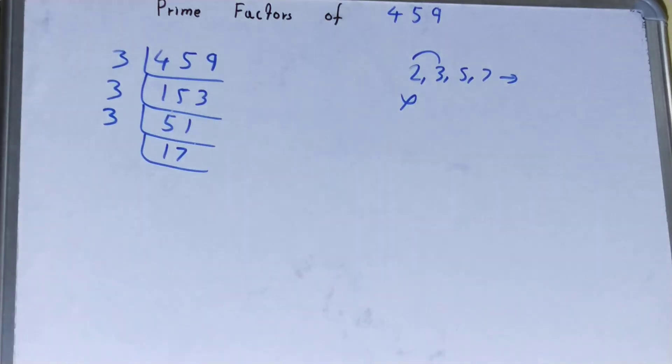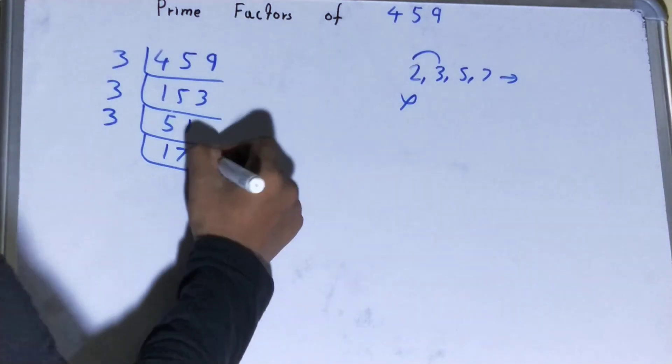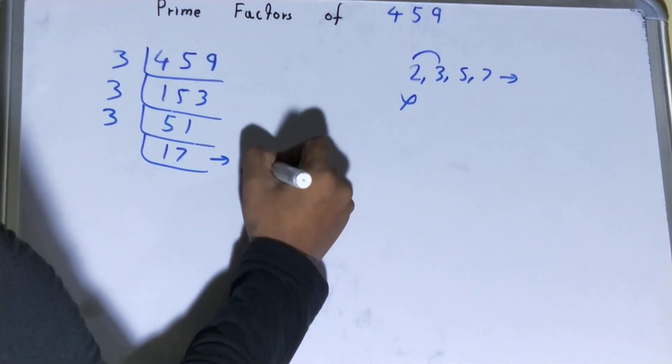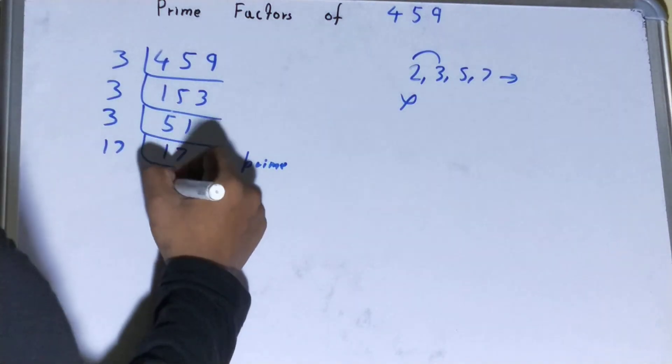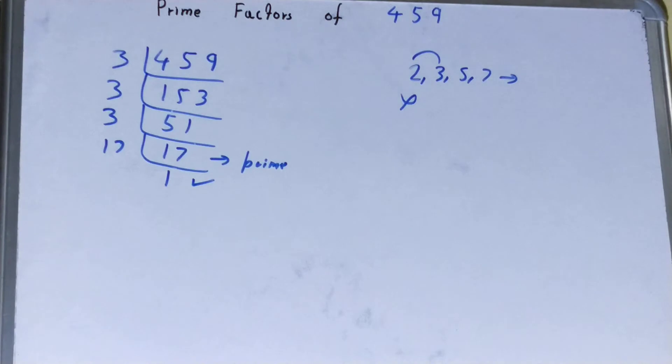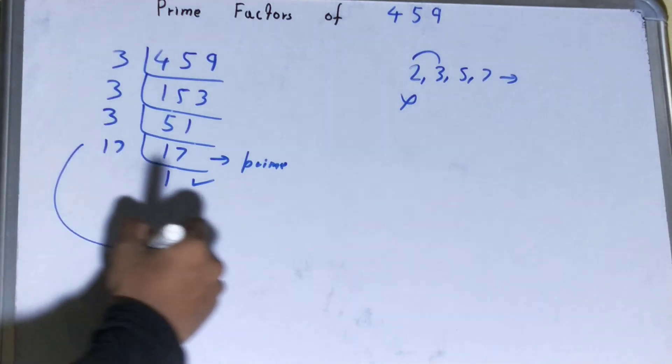Now this 17 is not further divisible by 3, and on top of that it is also a prime number. So it is only divisible by itself. To divide the 17 you need 17 on the left-hand side, and when you do so you'll be left with 1. Once you're left with 1, the work is done.